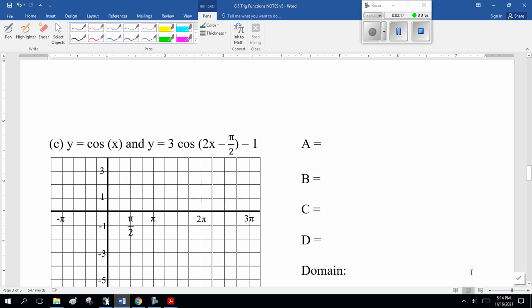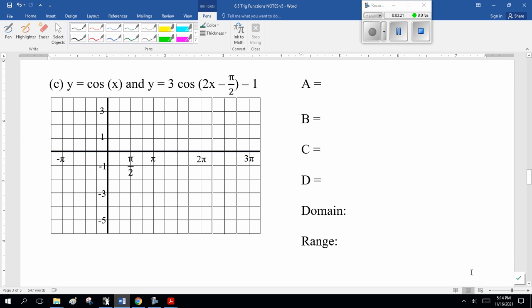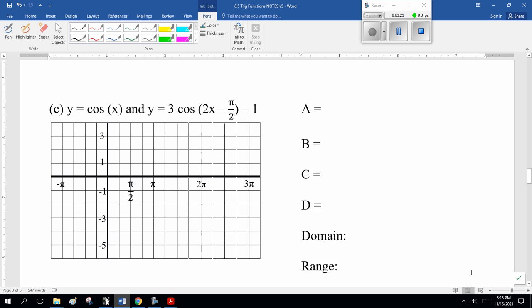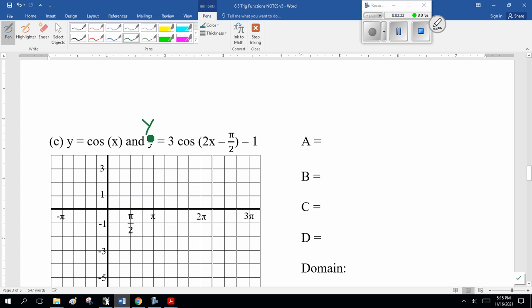Now, next graph. Cos of x and 3 cos of 2x minus 1 half minus 1. This one's a little nastier. So, here, a couple of things. Standard trick. Y is equal to 3. What's my B value? 2. Which means I factor 2 out of everything. So, that becomes pi over 4. Yes. I multiplied that by 2 and I get pi over 2. So, here, a is 3, b is 2, c is pi over 4, and d is minus 1.